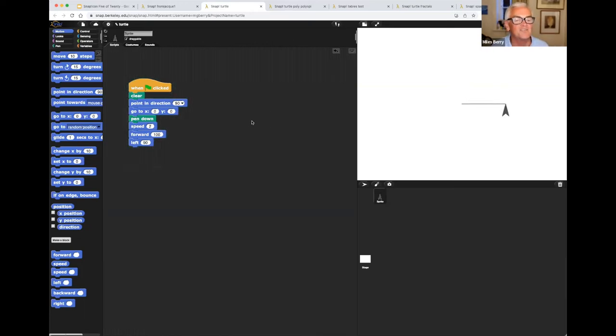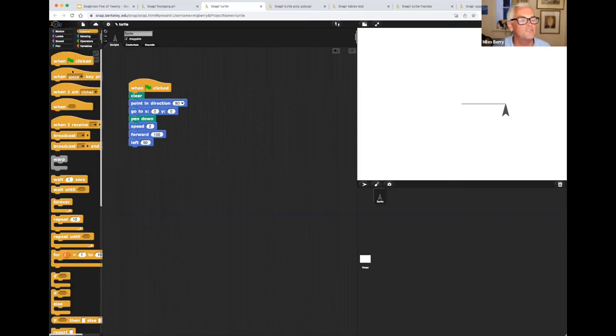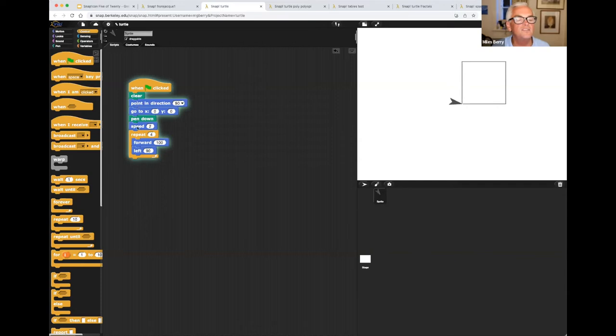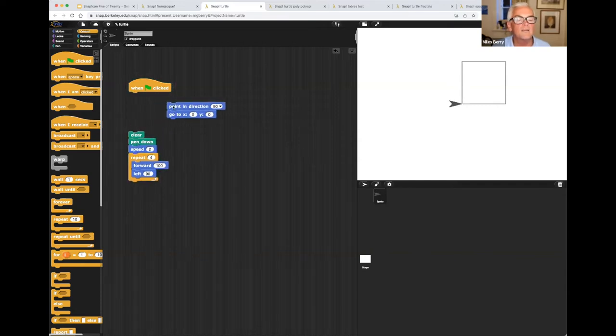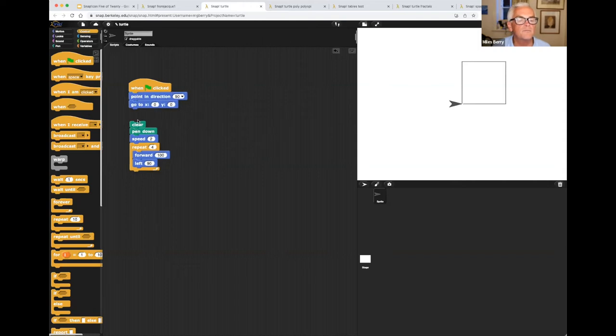And we get one side of our square. Typically, we'll introduce that as do that four times. But of course, then we would go very quickly to popping a repeating loop around. Repeat four times. And I should have cleared the screen just before I put the pen down. OK, so we get the square out of it.